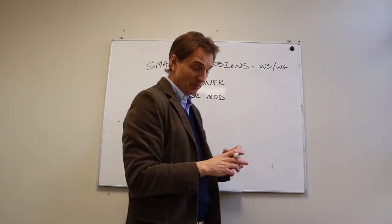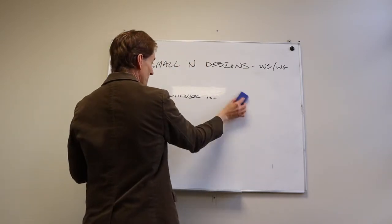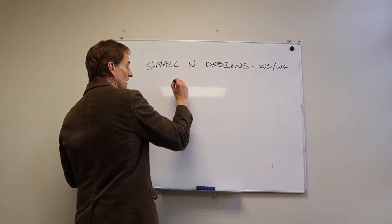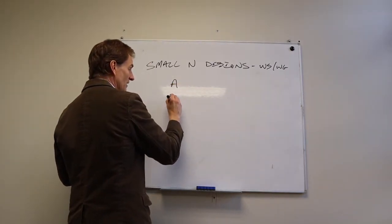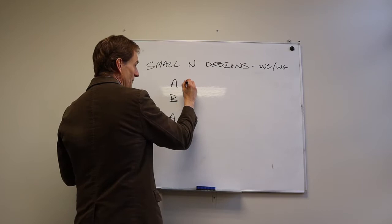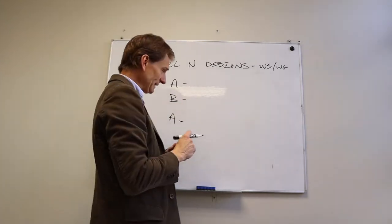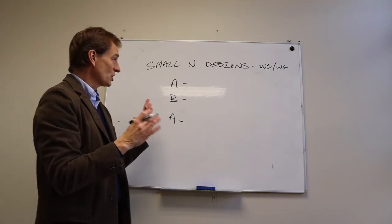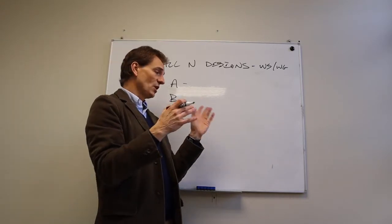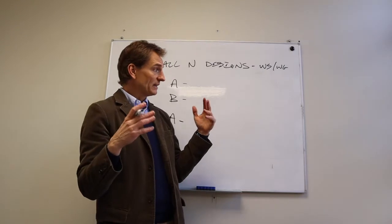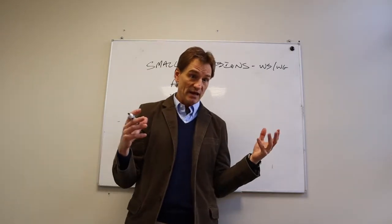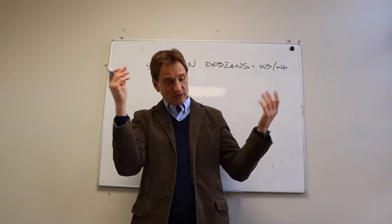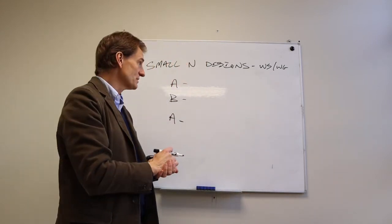What would be an example of a small n design? Well, the simplest type of small n design is what's called an ABA design. And let's say we're using this as a behavior modification study with a child who is in the autism spectrum. And let's say they're doing self-destructive behaviors, like they're biting themselves. Let's just go with that. They're biting themselves, doing self-stimulation.